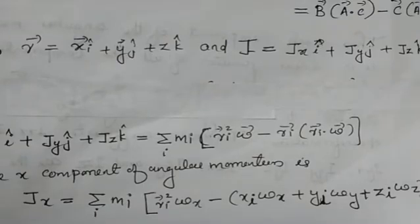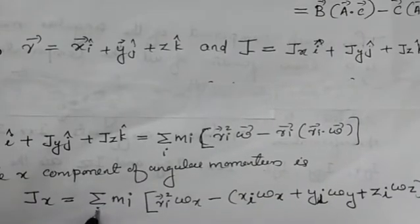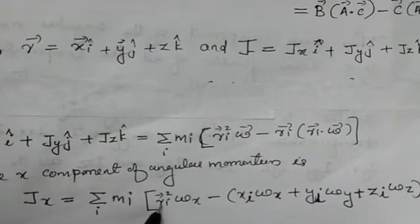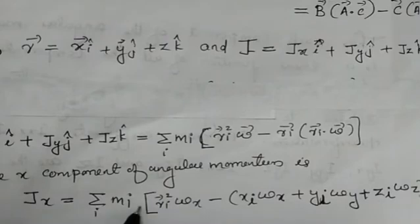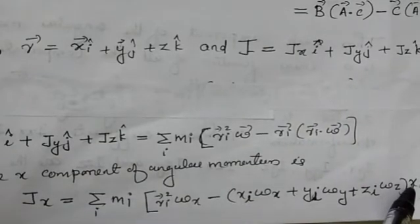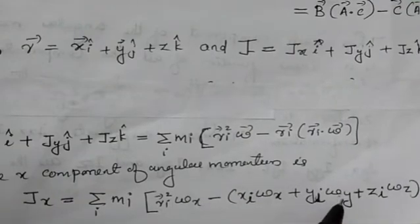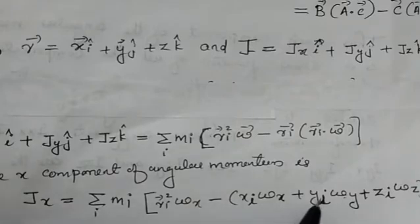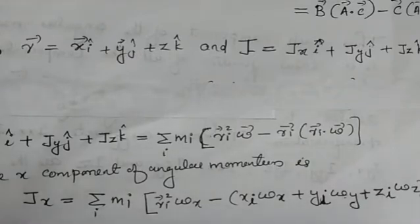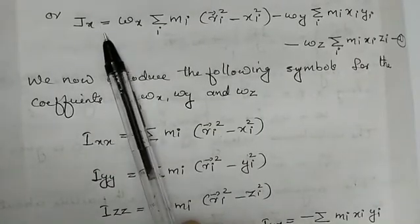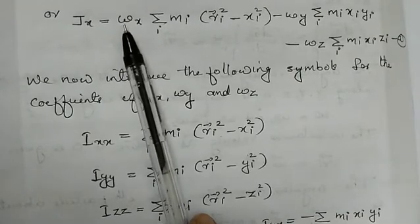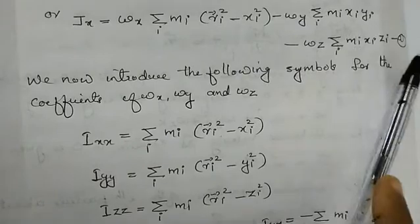Rearranging, J_x is equal to omega_x into summation_i m_i (r_i² minus x_i²) minus omega_y into summation_i m_i x_i y_i minus omega_z into summation_i m_i x_i z_i. So we have omega_x, omega_y, omega_z factored outside as the coefficients of the equation.